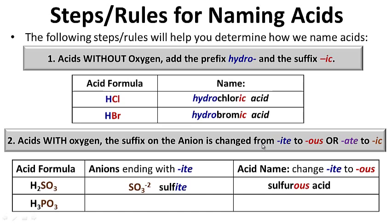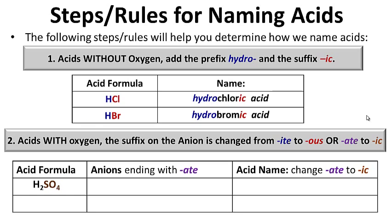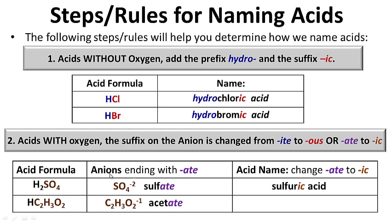H3PO4 contains the anion phosphate — but wait, that example was phosphite. For sulfate: the acid formula with sulfate has ate become ic, giving us sulfuric acid. And the acid containing acetate — the anion acetate — has ate become ic, giving us acetic acid, which is also vinegar. So if you're ever drinking vinegar, you're drinking acetic acid. Those are the rules or steps that you need to know.